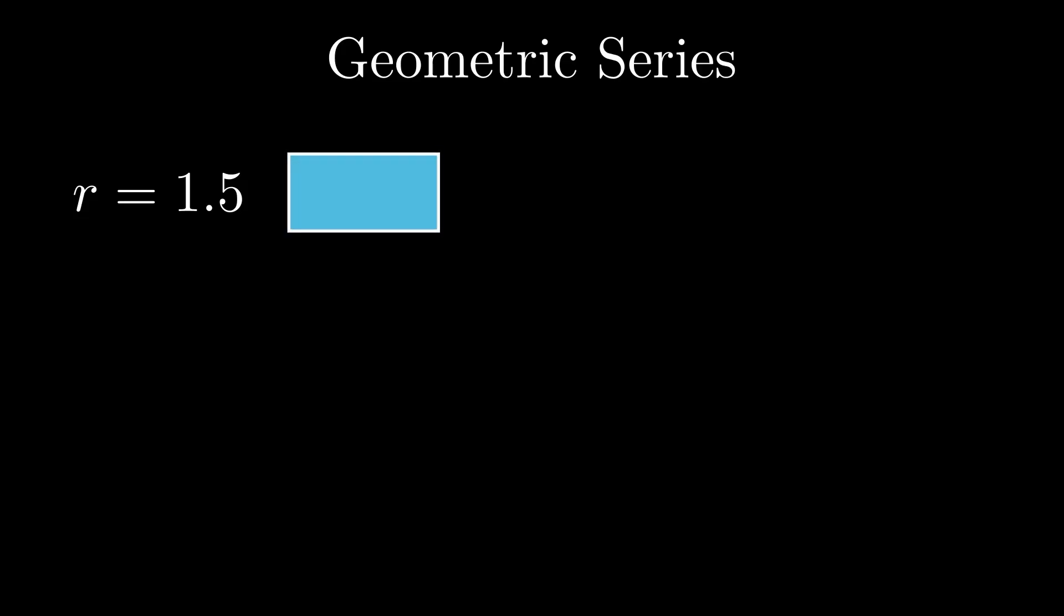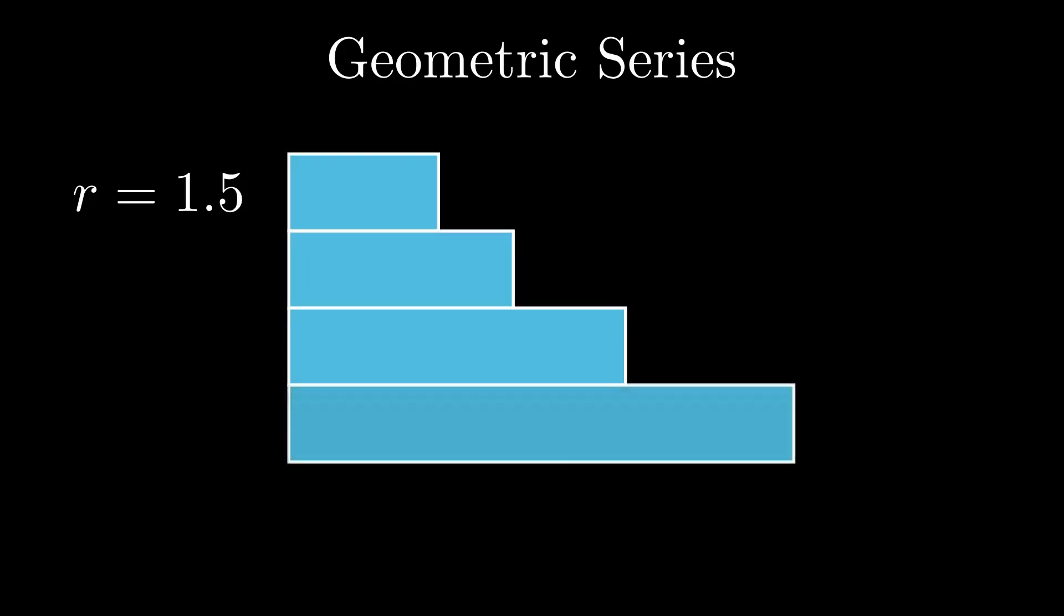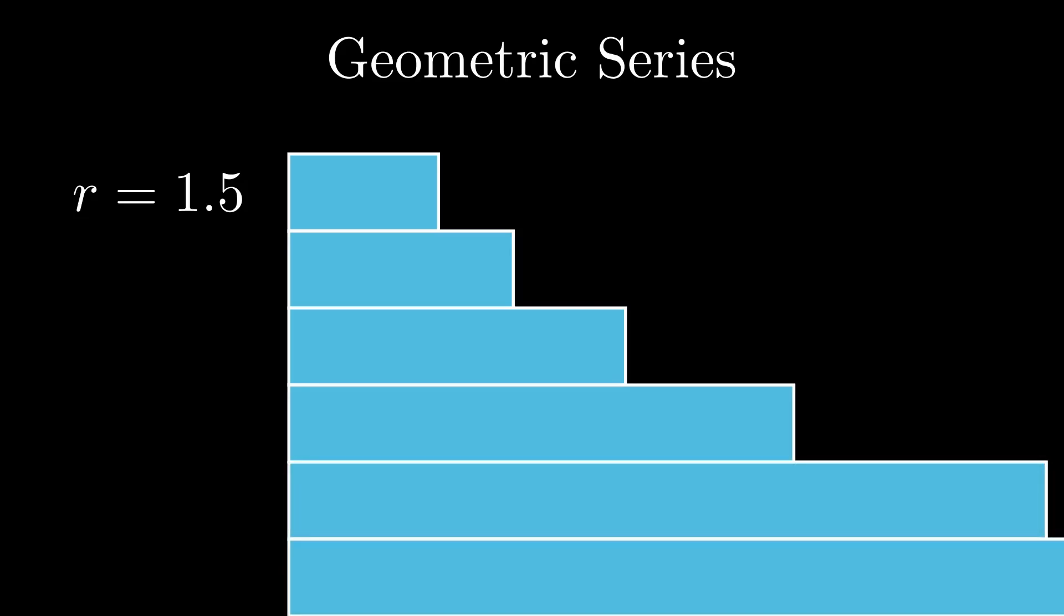Now, for r values, common ratios bigger than 1, or absolute values of r bigger than 1, you're constantly adding rectangles that are bigger and bigger, and so we call this a diverging series.